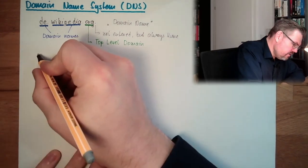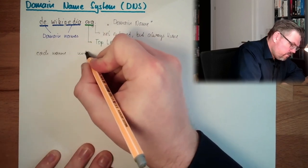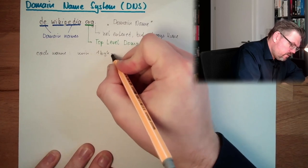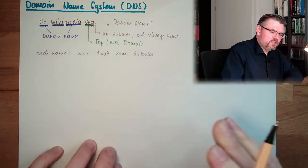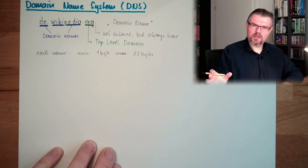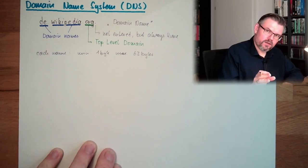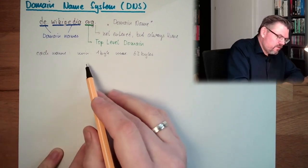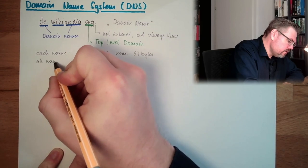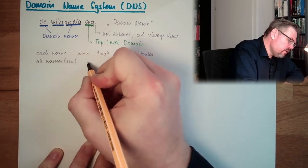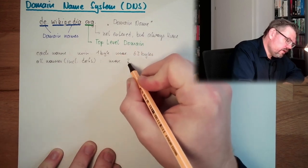Each individual name label has a minimum of one byte and a maximum of 63 bytes. And the total length of all names including dots has a maximum of 255 bytes.